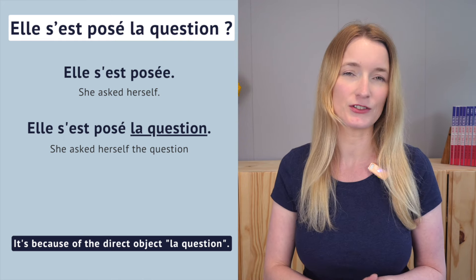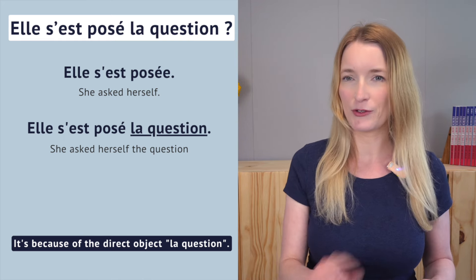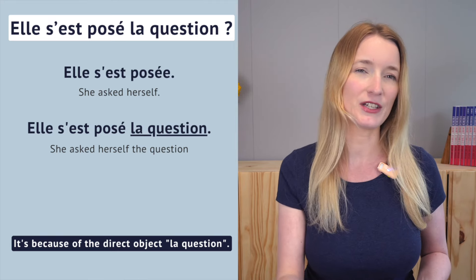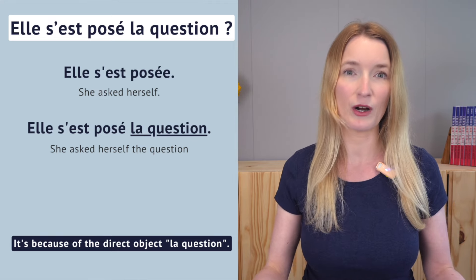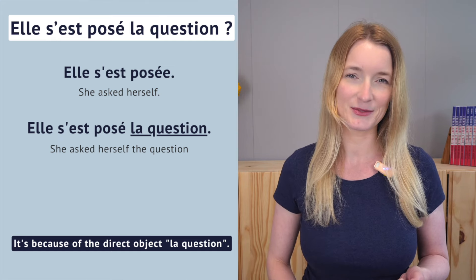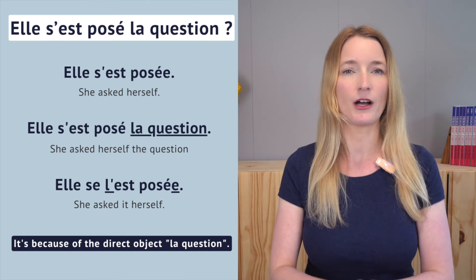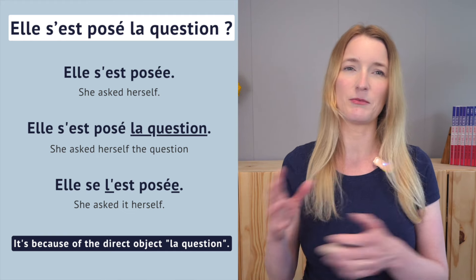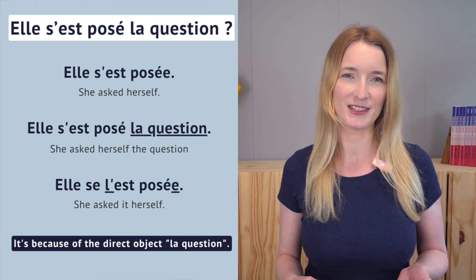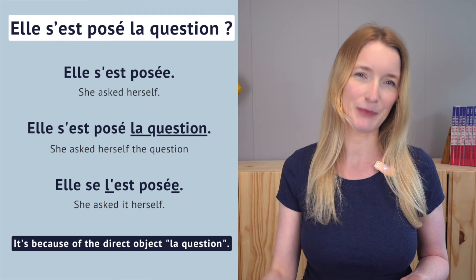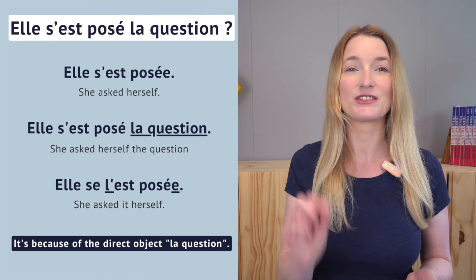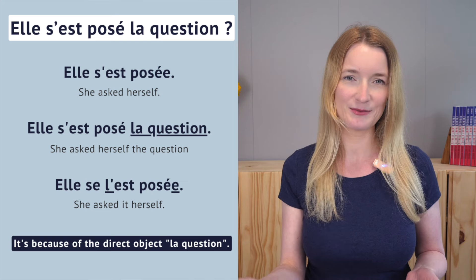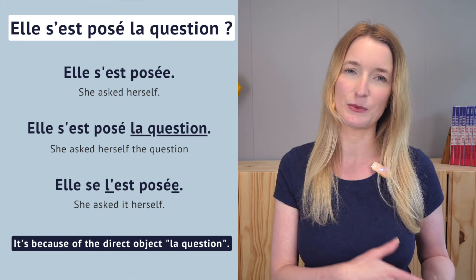If you don't know how to find the direct object, we find it by asking the question 'quoi' or 'qui'. So 'elle s'est posé quoi?' — 'la question' — 'la question' is the direct object. If we transform the direct object 'la question' into a direct object pronoun and place it before the reflexive verb, then the past participle agrees again: 'elle se l'est posée'.